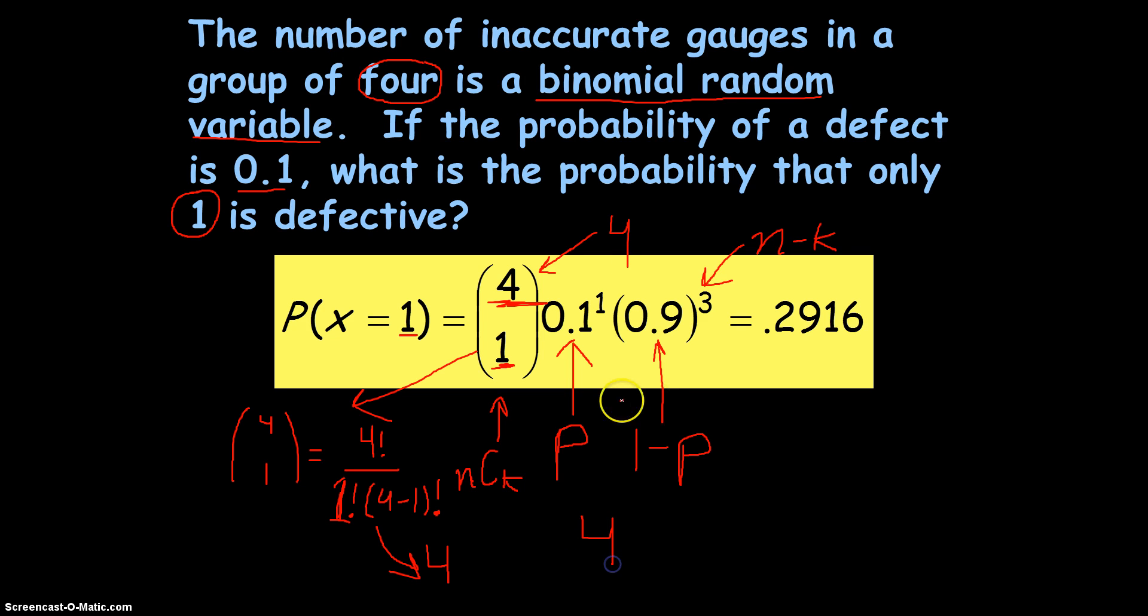So, 4 times 0.1, because that's the probability of success. So, that was our N choose K, which we simplified to 4, times our P to the power of K, times 1 minus P, which is 0.9, to the power of N minus K, which is 4 minus 1 equals 3. And if you do that all, 4 times 0.1 times 0.9 to the power of 3, you get 0.2916. And that's saying the probability of one gauge being inaccurate out of a set of 4 is going to be 0.2916.